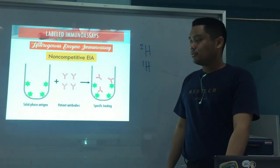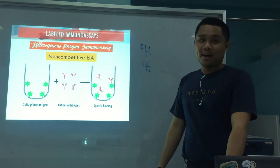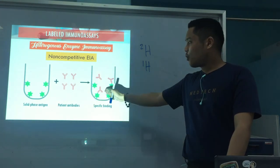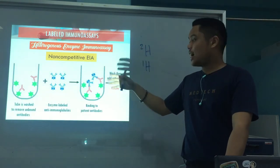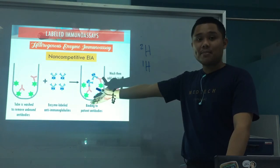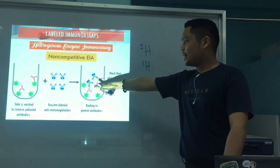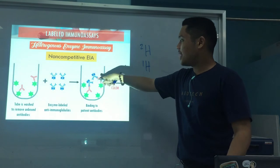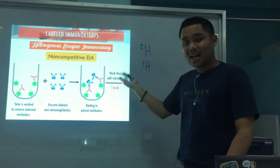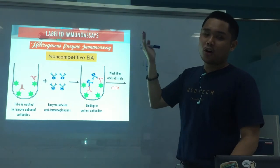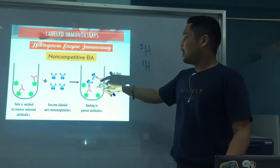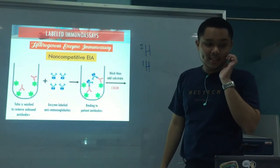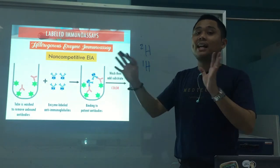Here is the illustration: since we're detecting antibodies from the patient, antigens are attached to the solid phase. You add patient antibodies, specific binding occurs, then you wash to remove unbound antibodies. Then you add enzyme-labeled antibodies — these bind to the patient's antibodies. You wash again, then add substrate. If high color or enzyme activity is detected, it means many antibodies from the patient were present and attached to the enzyme-labeled antibodies — directly proportional.